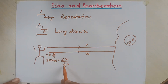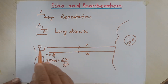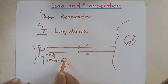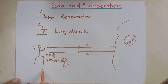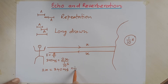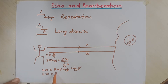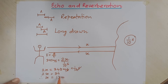The sound produced by this person comes back exactly within 1/10 of a second if the distance between this person and the sound reflecting surface is X. Calculating: 2x = 340 m/s × (1/10) s. The seconds cancel, giving 2x = 34, therefore X = 34 ÷ 2 = 17 meters.